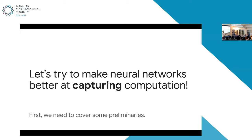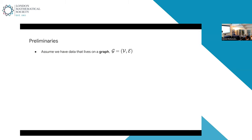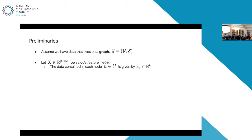Before I dive into how to do that, we need to cover some preliminaries. So many people before me talked about graph machine learning that this should be a relatively smooth transition, but it's good to go over it again since I will probably use slightly different notation. Let's assume we have data that lives on a graph, which is a structure that's a tuple of a set of nodes and a set of edges connecting those nodes. Because it's deep learning, we're interested in featurizing those nodes. Let's assume that capital X is a node feature matrix of shape number-of-nodes times number-of-features, such that each row of this matrix gives you the features of a particular node in your graph.